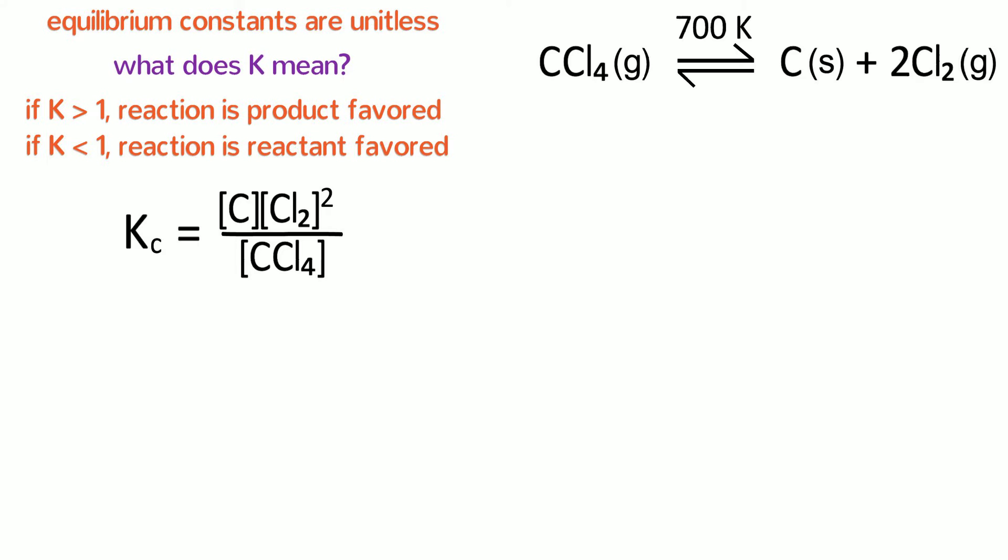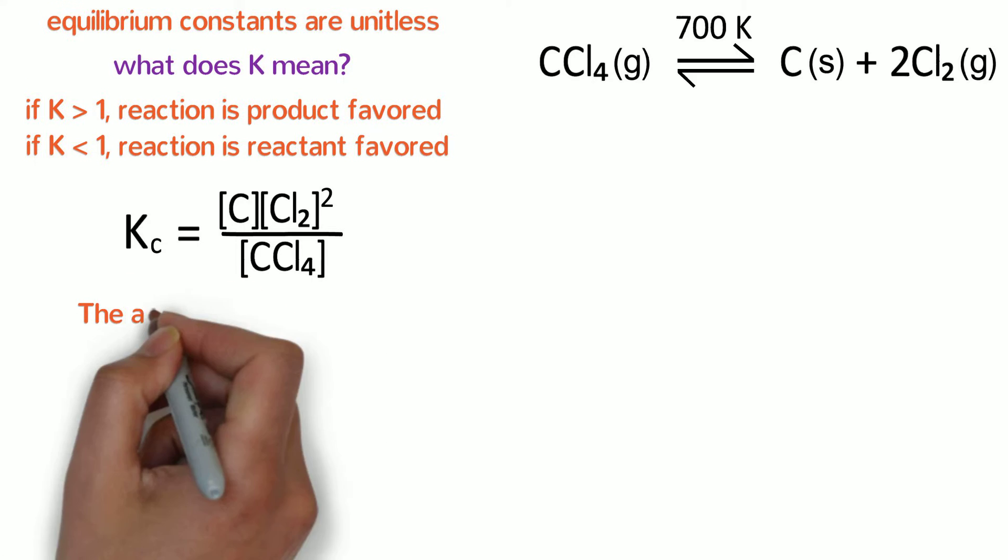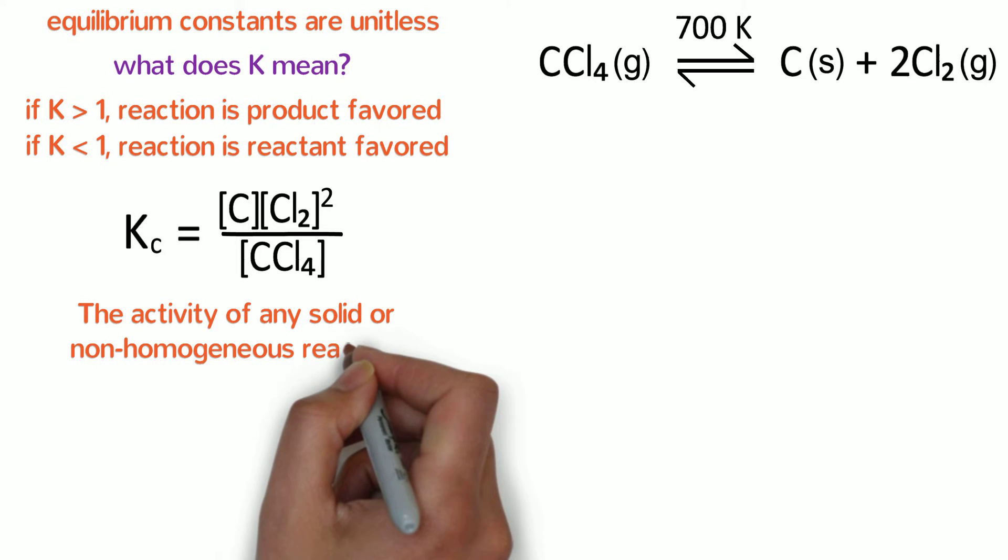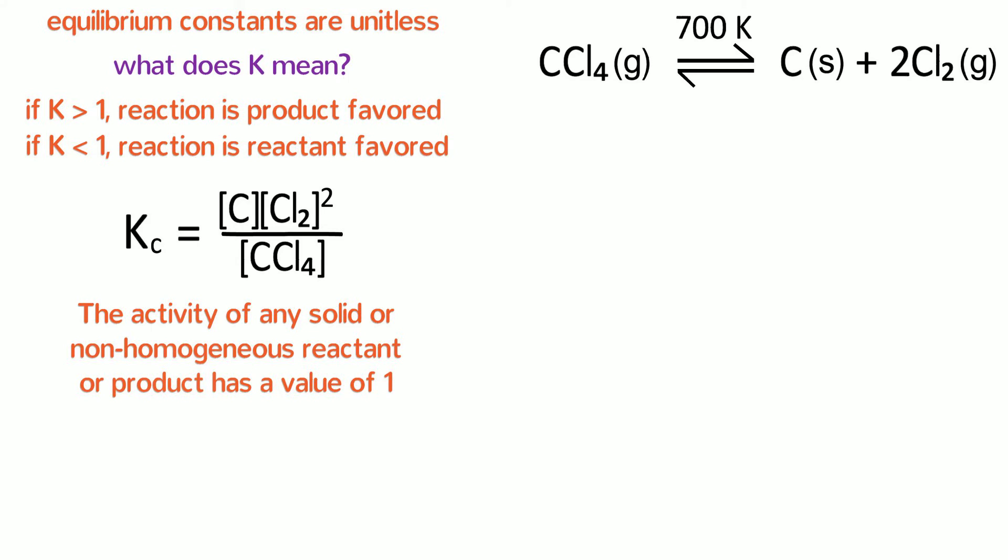However, carbon is a solid, so what is its molarity? The molarity, or more correctly, activity of any solid or non-homogeneous reactant or product has a value of 1. That means that we can exclude all solids or non-homogeneous chemicals from the equilibrium expression, so the molarity of carbon should be erased. In addition, solvents typically have an activity of 1 and are not written in the equilibrium expression.